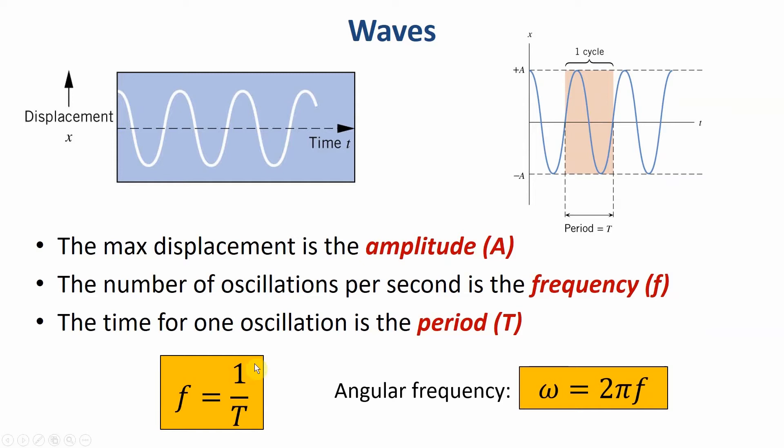We have some formulas here. The frequency is one over the period. I'm also going to define an angular frequency, an omega, that's just the frequency times two pi. Now we're going to use this to connect back to the rotation unit that we did before.